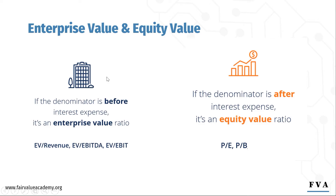Remember, the point here is that there's no such thing as a price-to-EBIT, price-to-EBITDA, or price-to-revenue multiple, because there is a mismatch in the numerator and the denominator. And similarly, you will never see EV over net income or EV over book value. Just make sure things are consistent when you are calculating your multiples.